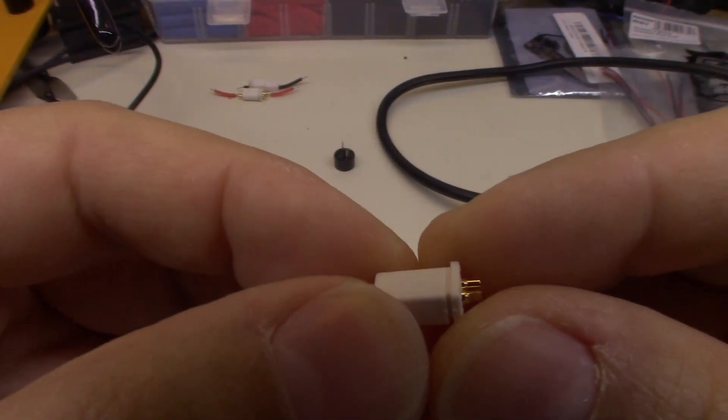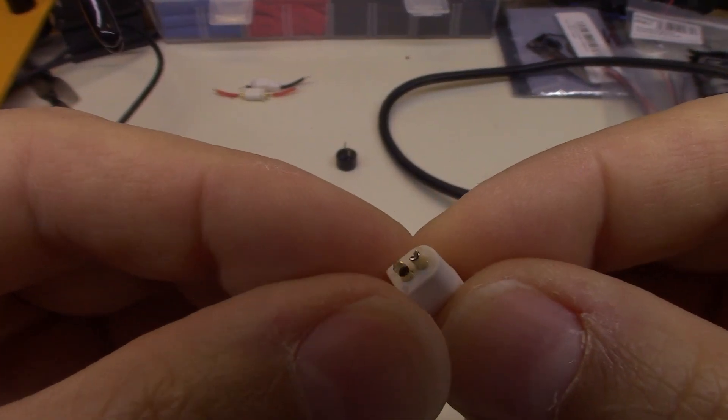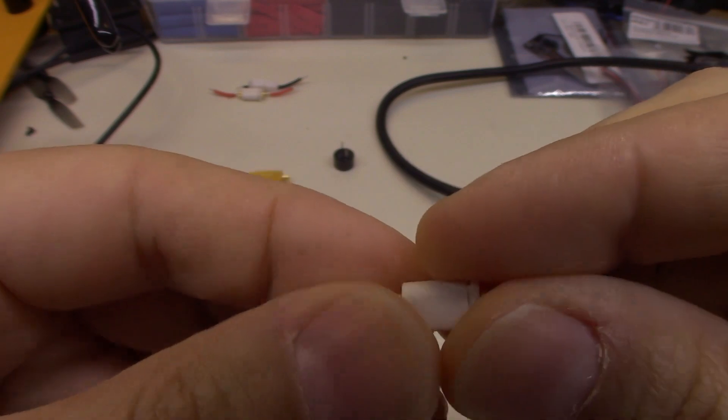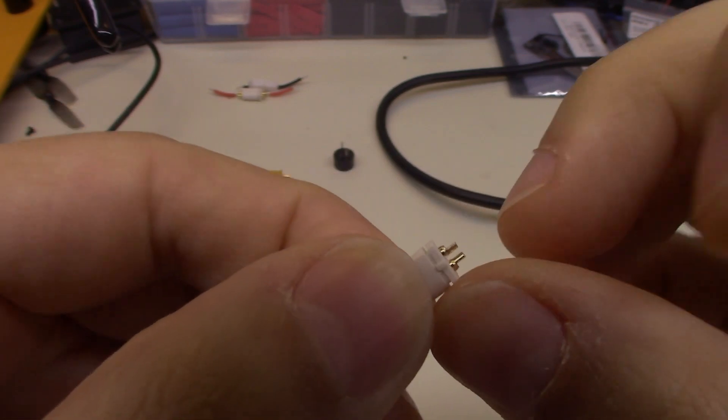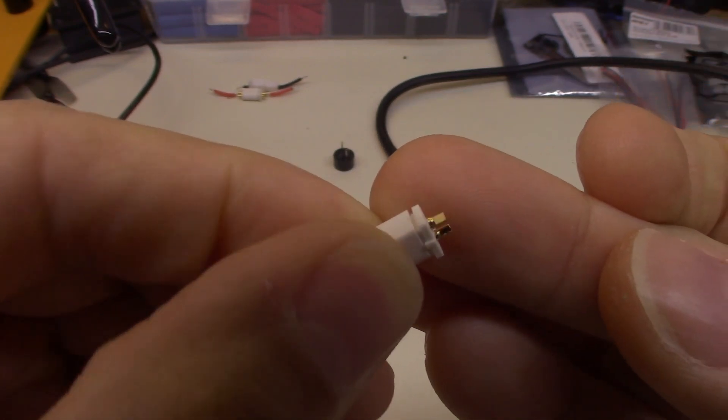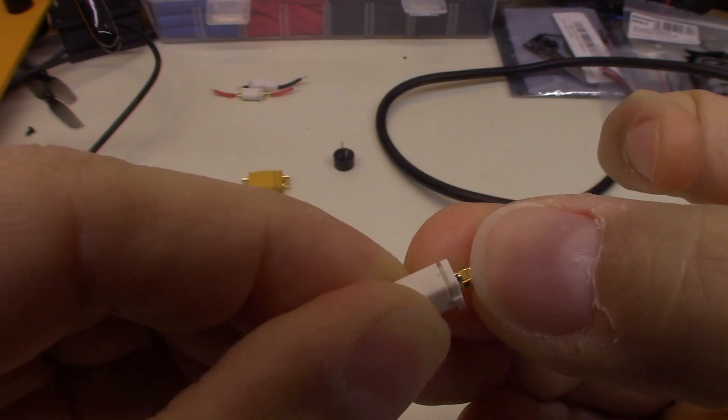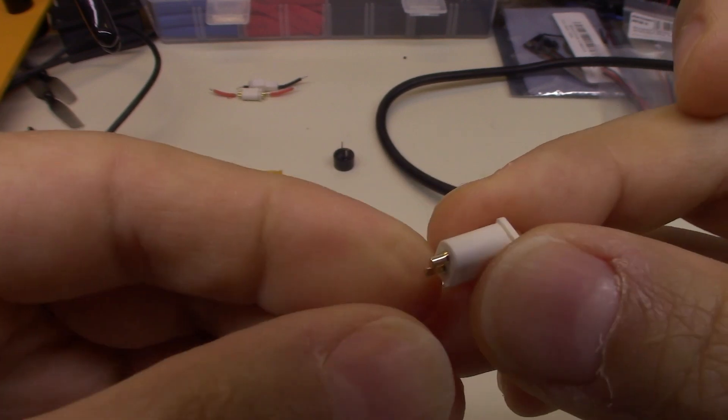Alright, so I've got a made-up pair here, male and female BT 2.0 connector. As you can see, they are gold-plated. They have a flat on the edge of the contact that you'll be soldering to on all four of them.